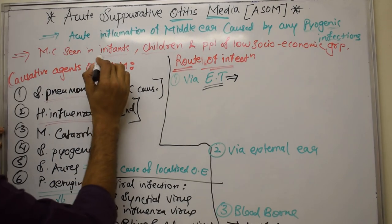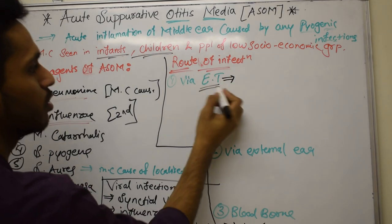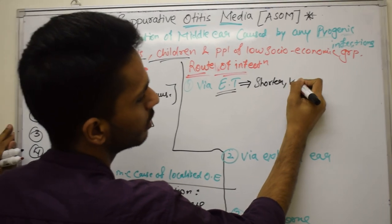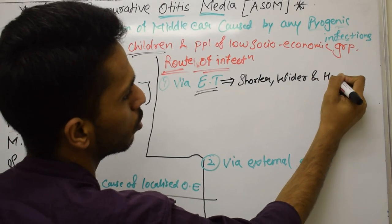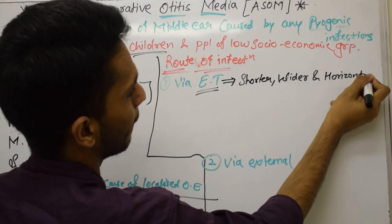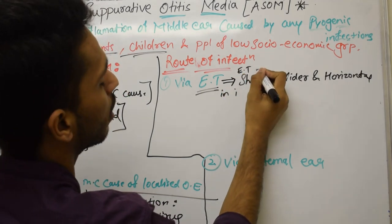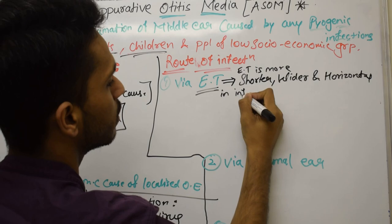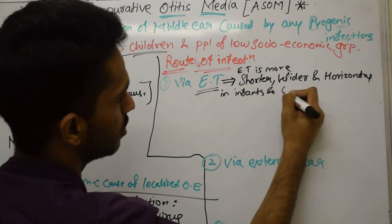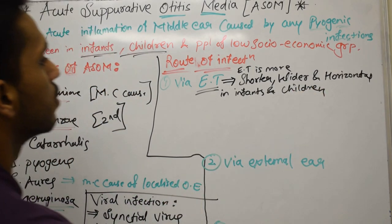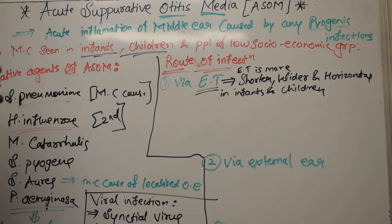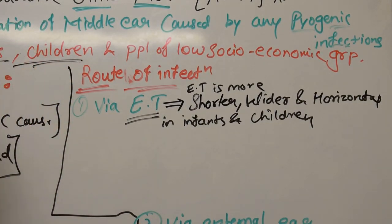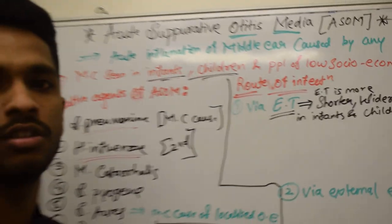ASOM is most commonly seen in infants and children because it spreads through the Eustachian tube. The Eustachian tube of children is shorter, wider, and more horizontal compared to adults. This makes it easier for viruses or bacteria to pass through the Eustachian tube into the middle ear, which is why ASOM is most commonly seen in children and infants.